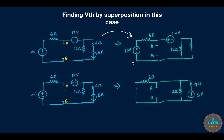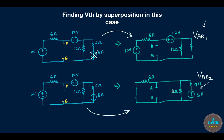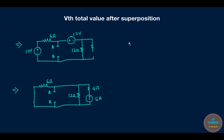For the first figure, we are only considering the voltage sources and have cut out the current source. For the second figure, we have shorted the voltage sources and kept only the current source. We'll call the voltage across ab in the first case Vab1, due to voltage sources only. For the second diagram, we'll call it Vab2, the voltage across ab when only the current source is acting. We then add Vab1 plus Vab2 to get Vth.